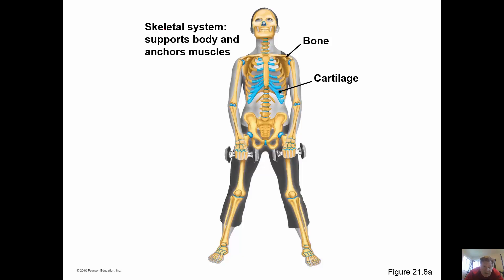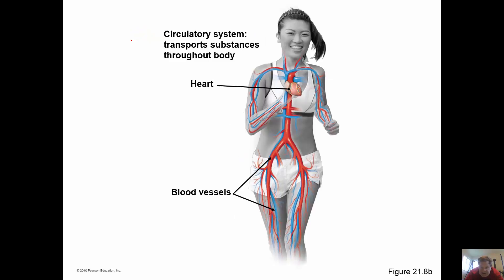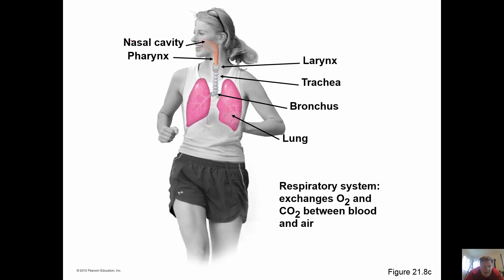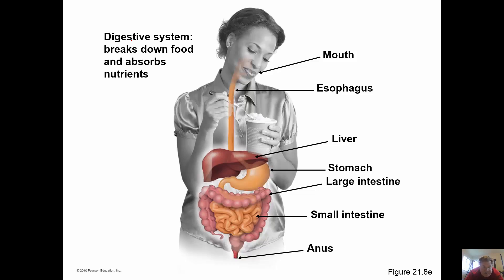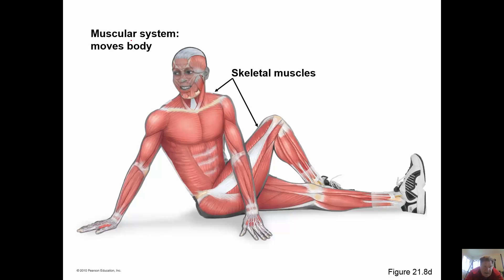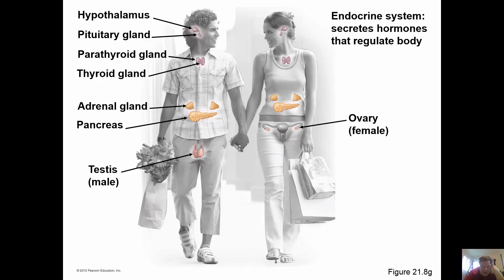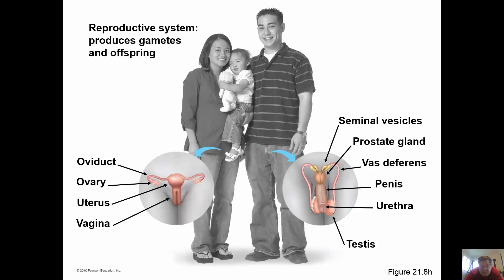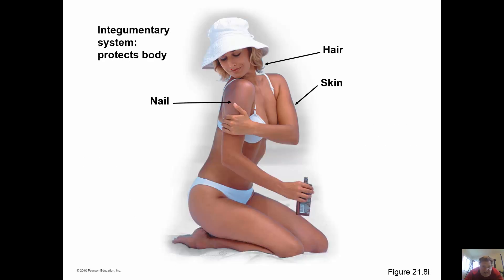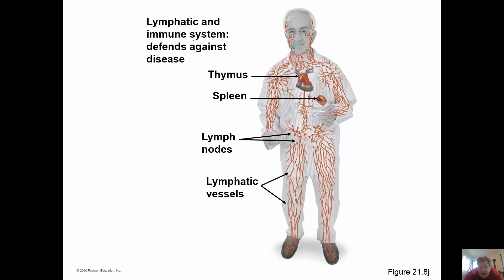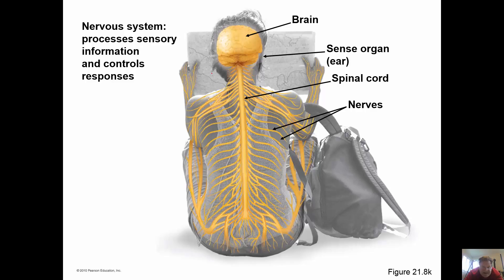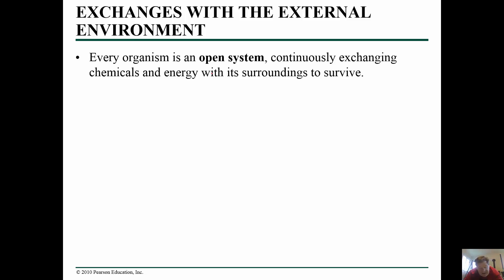Organ systems are teams of organs that work together to perform vital functions. We have roughly about eleven of them: the skeletal system supports the body and anchors muscles; the circulatory system transports substances throughout the body; the respiratory system moves materials in and out; the digestive system handles breakdown and absorption of food; the muscular system is responsible for movement; the urinary system removes excess water and waste; the reproductive system allows our species to replicate; the integumentary system covers and protects the body; the lymphatic and immune system defends against pathogens; and the nervous system handles thinking, learning, and communication.